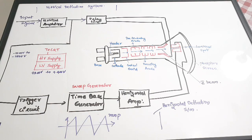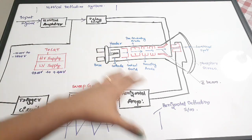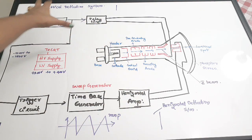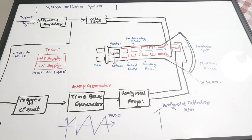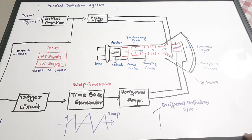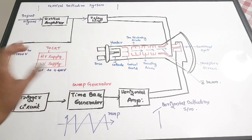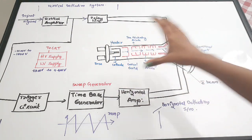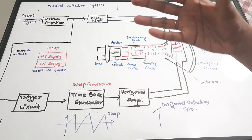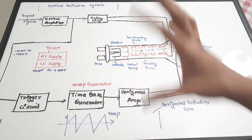Now we are going to see the block diagram of CRO. This block diagram can be broadly classified into three sections: the vertical deflection system, the horizontal deflection system, and the cathode ray tube — the heart of the CRO — along with the power supply. The major portion is the cathode ray tube, while the other sections handle controlling, coordinating, and deflection.